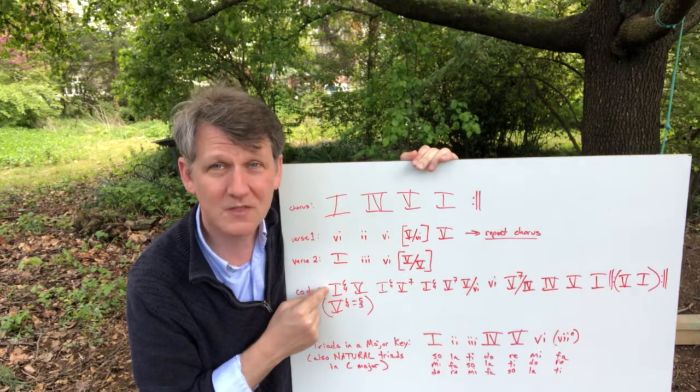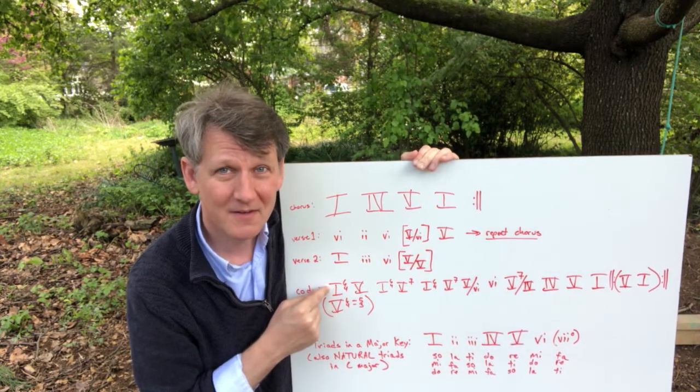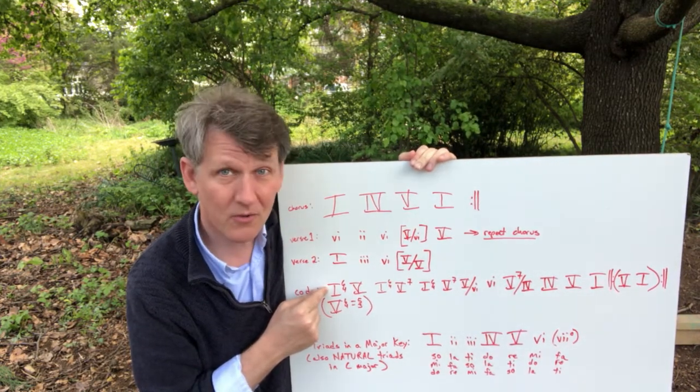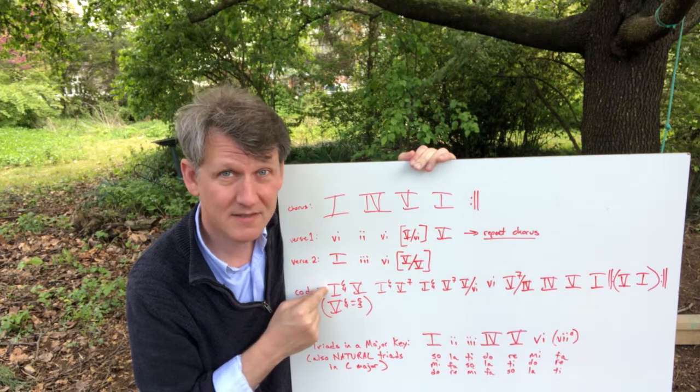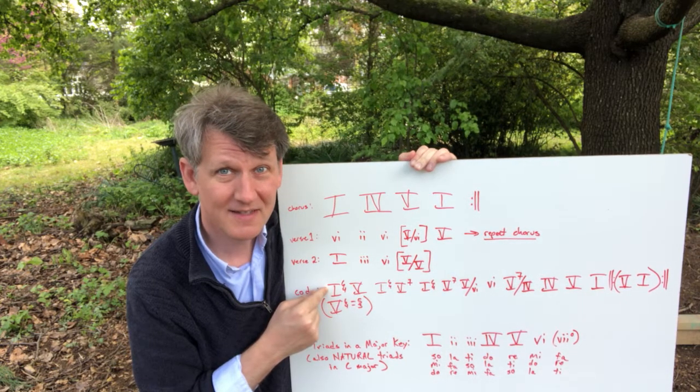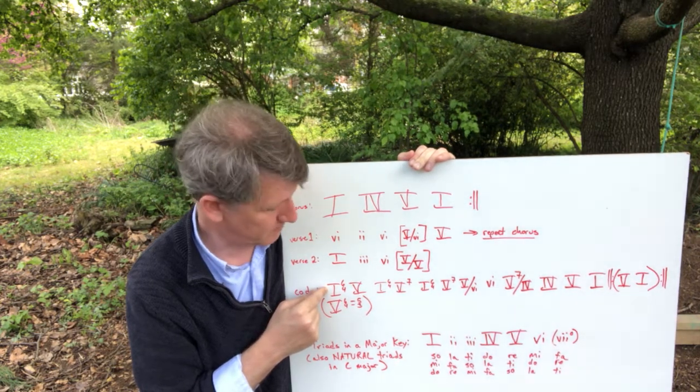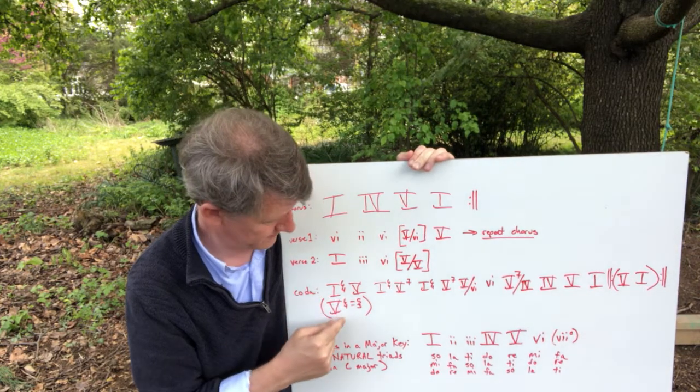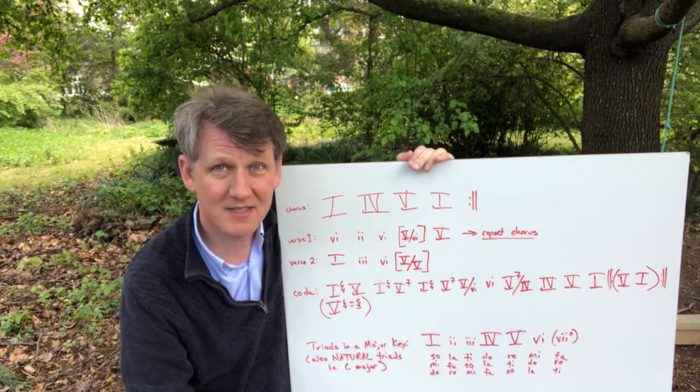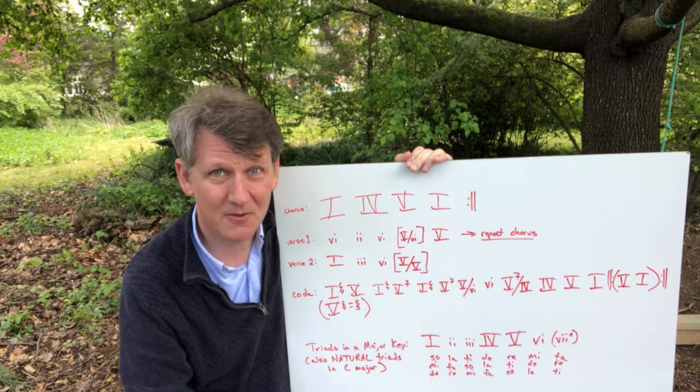But the cadential 6-4 has all of the notes of a I chord in it, DO MI and SO, except that SO is in the bass. The fifth scale degree is in the bass of that chord, and because the bass is so powerful, it makes it feel like a suspension of a dominant chord.